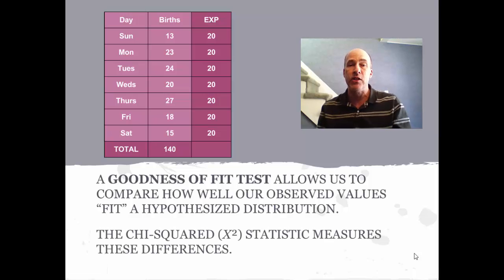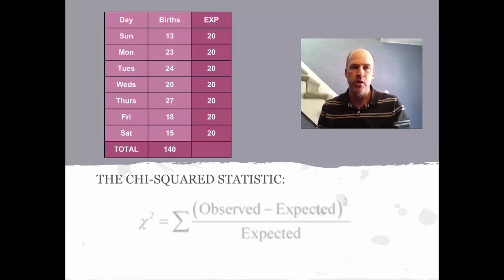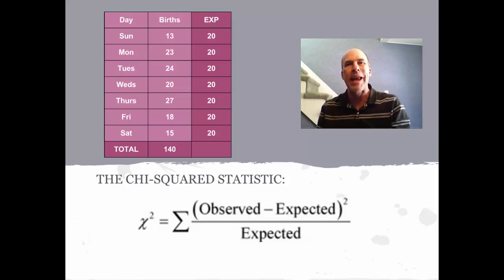The chi-squared statistic—notice the Greek letter chi there, looks like an italicized x—measures these differences. Let's dive into the chi-squared statistic and its formula. It's a summation where we're going to be adding things together. For each of the days of the week, we take the observed count and the expected count, subtract those, square that, and divide by the expected.